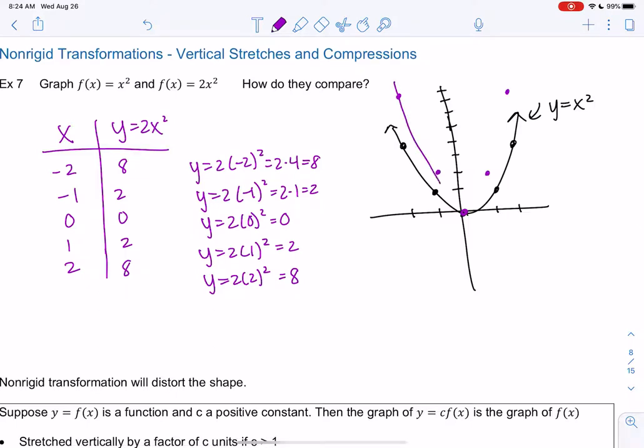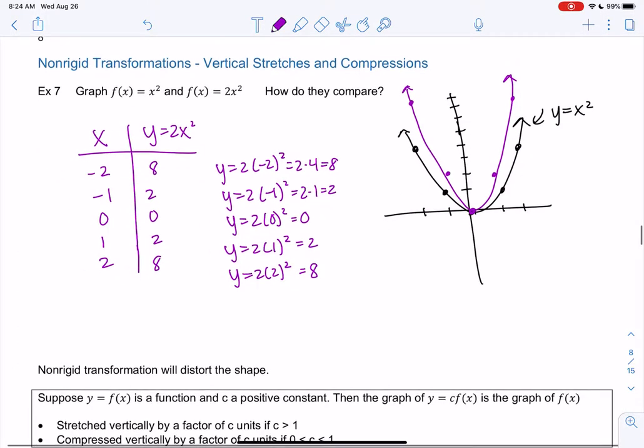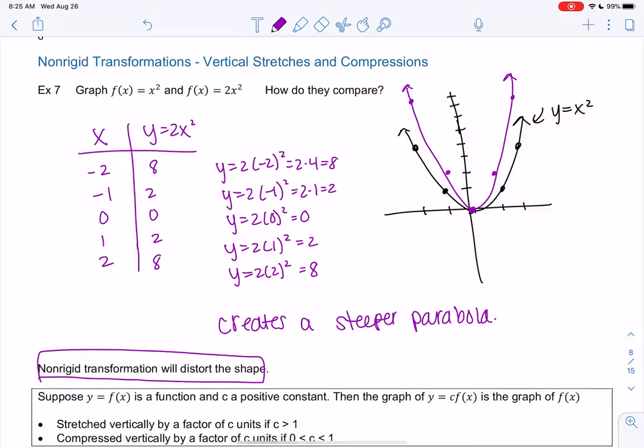What do we think? It's like steeper. Creates a steeper parabola. So it's still a parabola but the shape is distorted. So that's what non-rigid does. It distorts the shape a little.